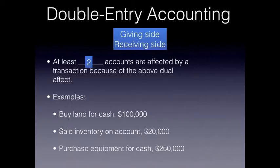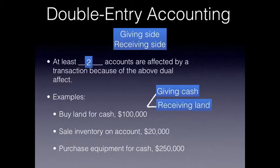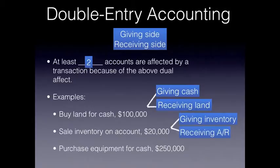Let's look at some examples of double entry accounting and this giving and receiving side of transactions. If we buy land for cash, we're giving cash and we're receiving land. If we sell inventory on account — meaning they'll pay us later — we are giving inventory and we're receiving an account receivable. If we purchase equipment for cash, we are giving cash and receiving equipment.